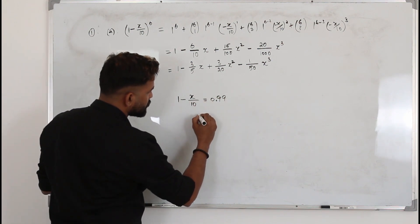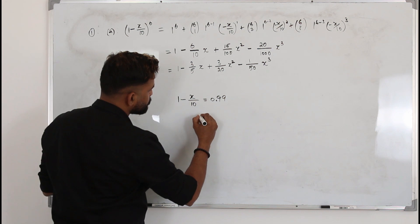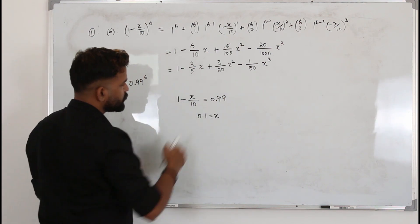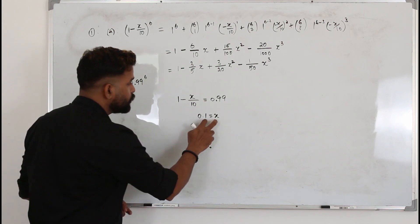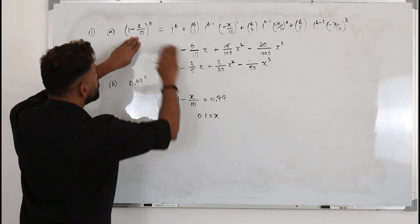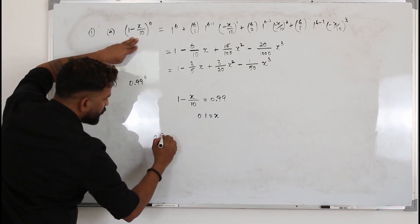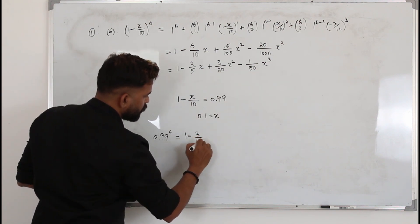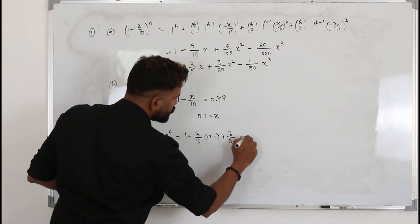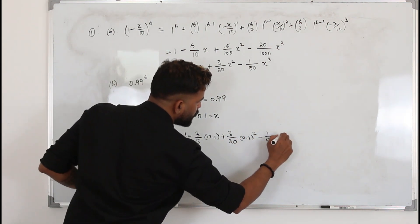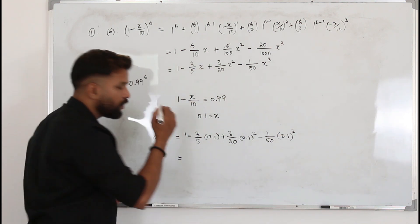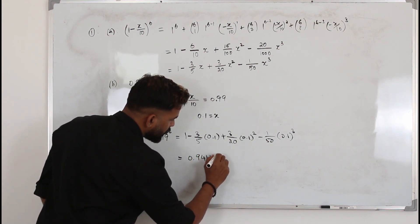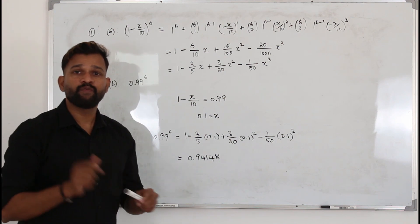Rearranging 1 − x/10 = 0.99 gives x = 0.1 (since 0.01 × 10 = 0.1). Now substitute x = 0.1 on both sides. The left side becomes 0.99⁶. On the right side, substitute into 1 − 3/5(0.1) + 3/20(0.1)² − 1/50(0.1)³ to get the approximation 0.94148.